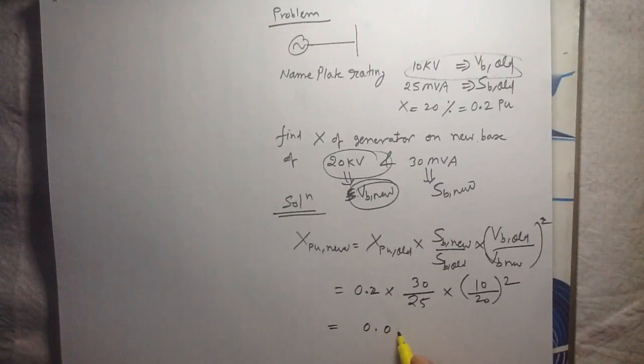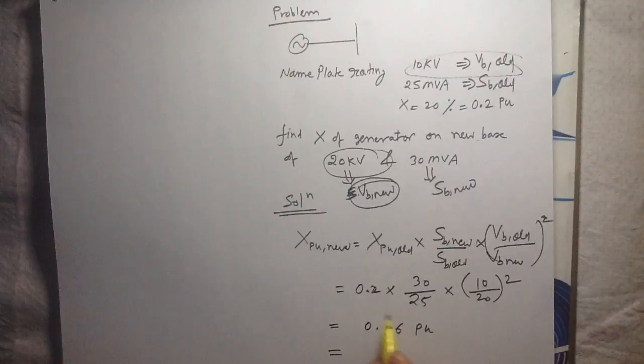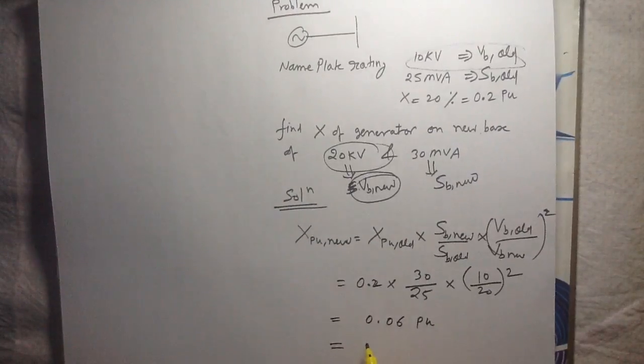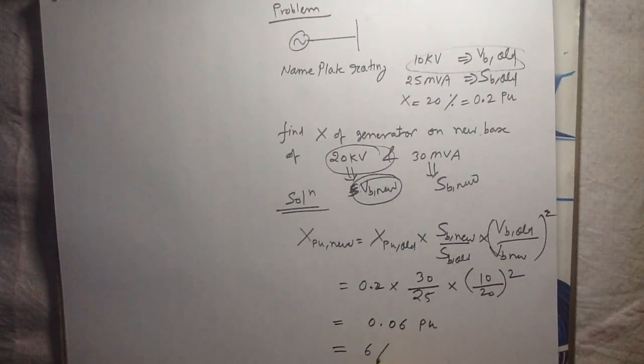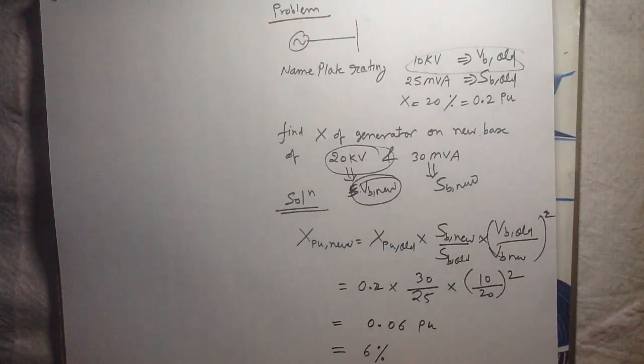After solving it, you get the value equals to 0.06 per unit. You can write it in percentage also, and the percentage value will be equal to 6%. Multiply this value with 100 and you will get the per unit value in percentage.